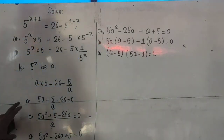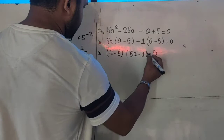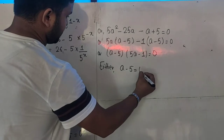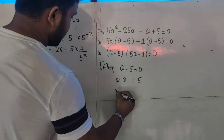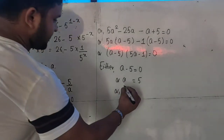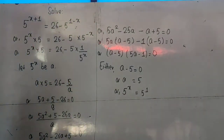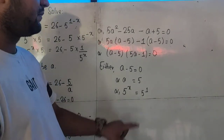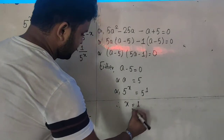We have two possibilities. First, if a - 5 = 0, then a = 5. Since a = 5^x, we have 5^x = 5^1. The bases are the same, so by the rule of indices the exponents must be equal: x = 1.